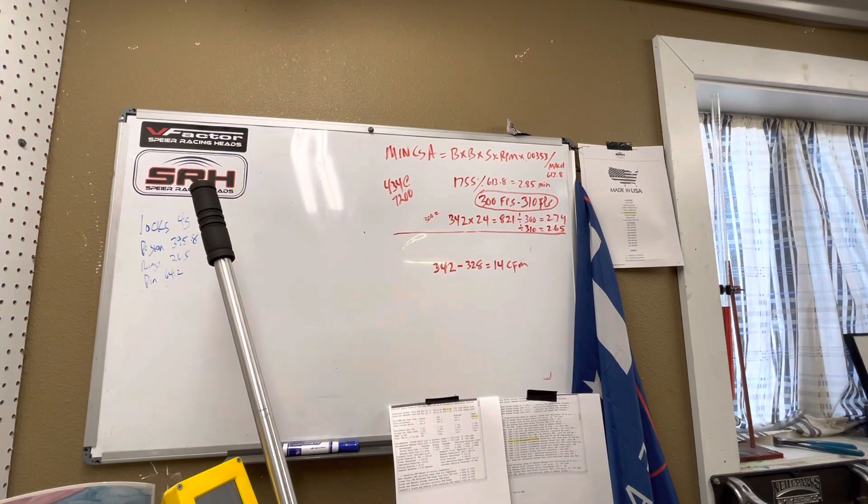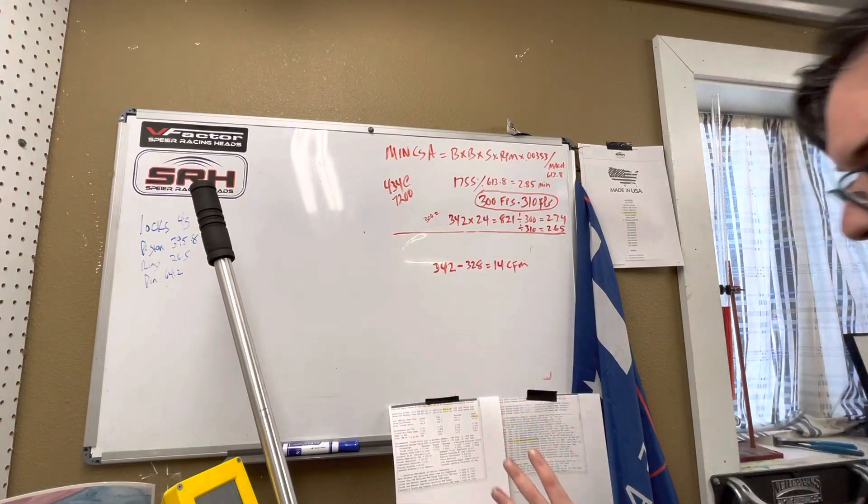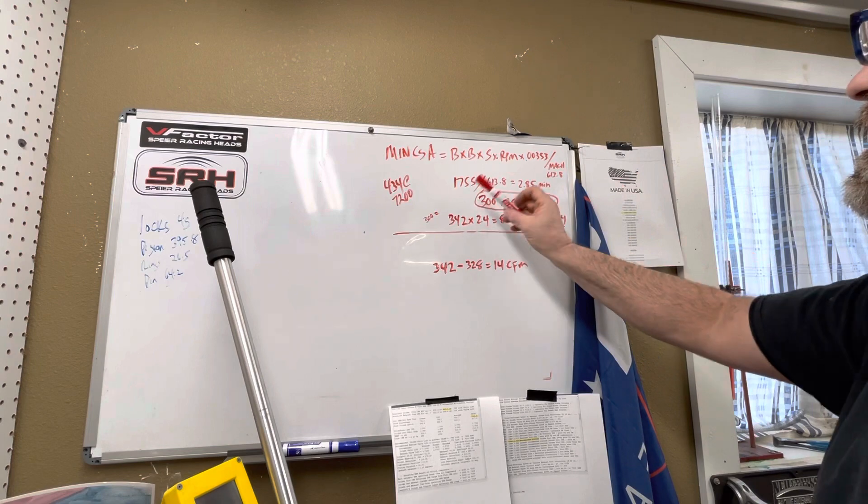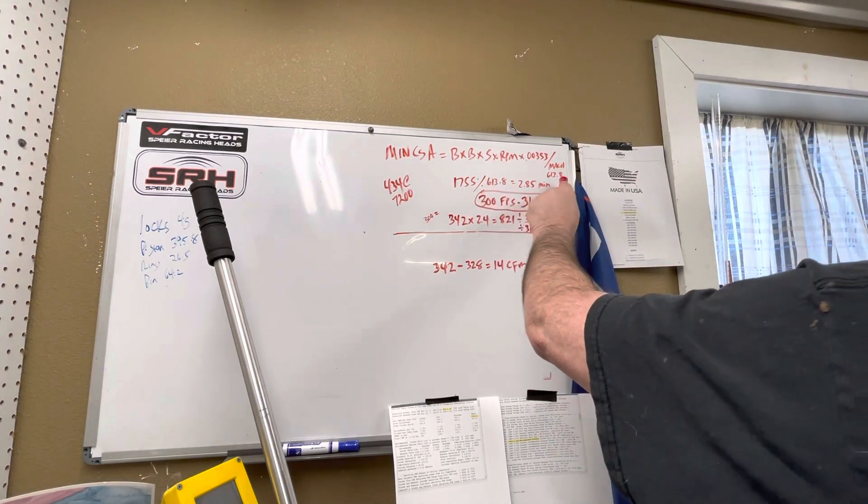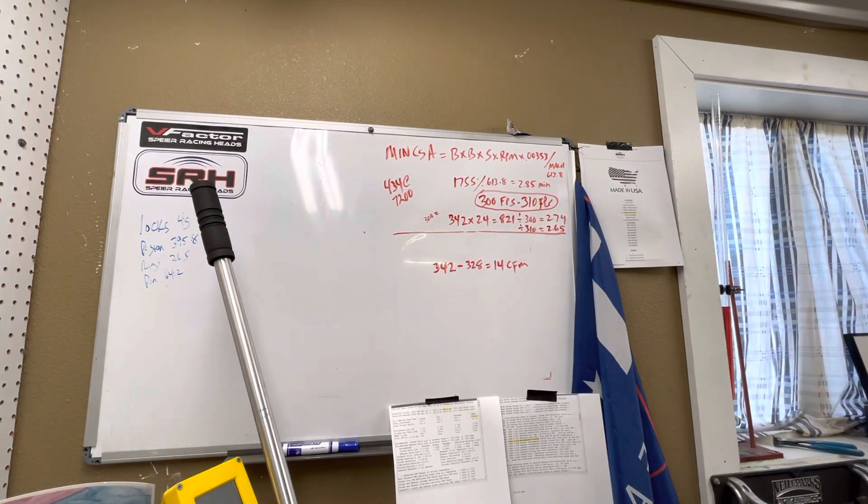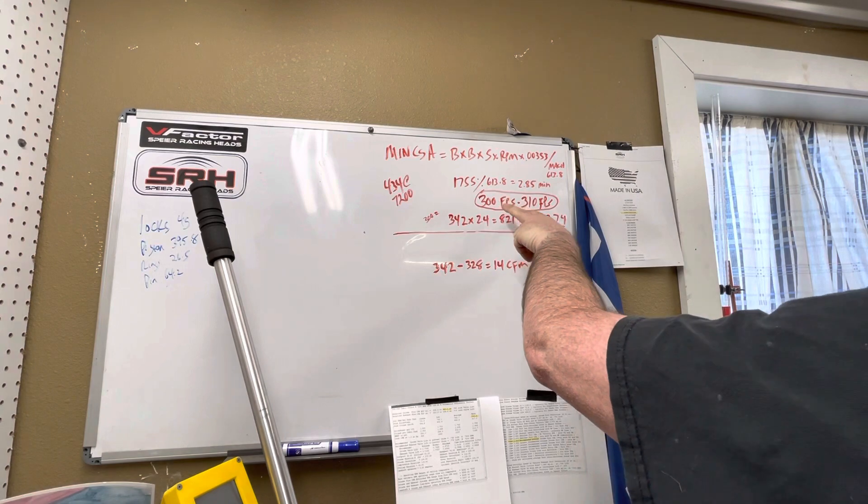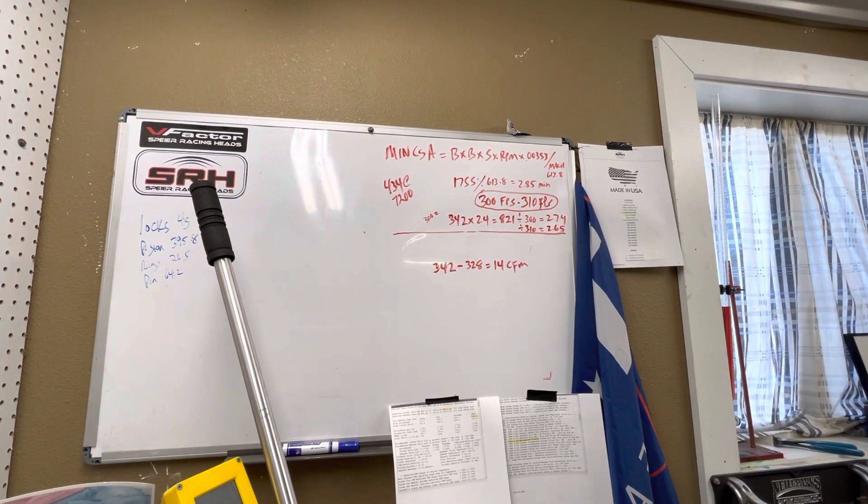So I'm going to show you how I arrive at that cylinder head. There's our math again - minimum cross-section. It tells me at 0.55 Mach I need 2.85. I know from my experience that a low port small block head, depending on the application, I'm going to run the minimum at 300 to 310 feet per second dead center.